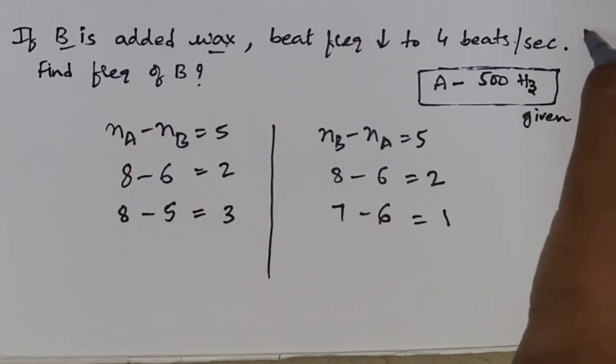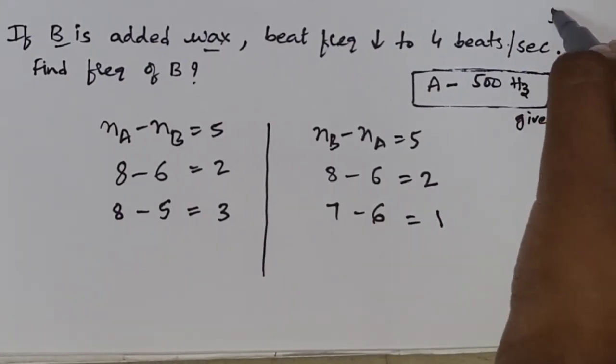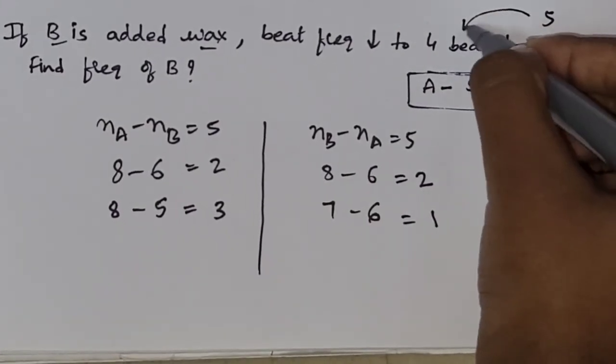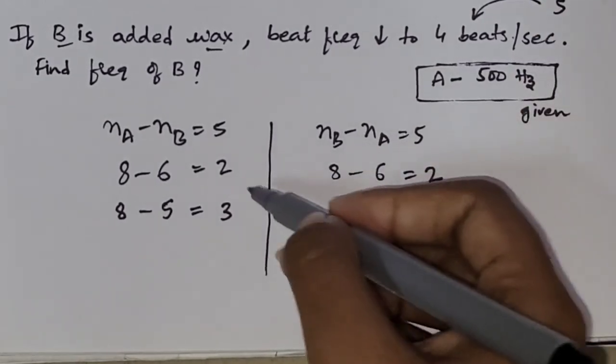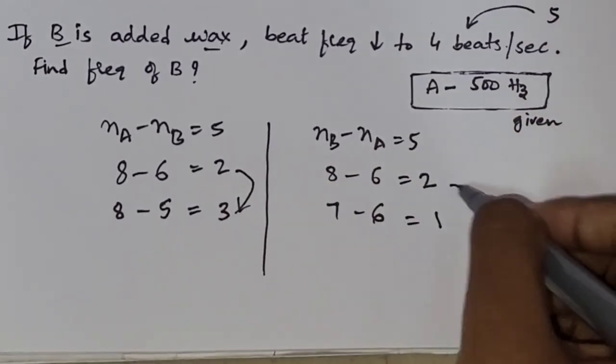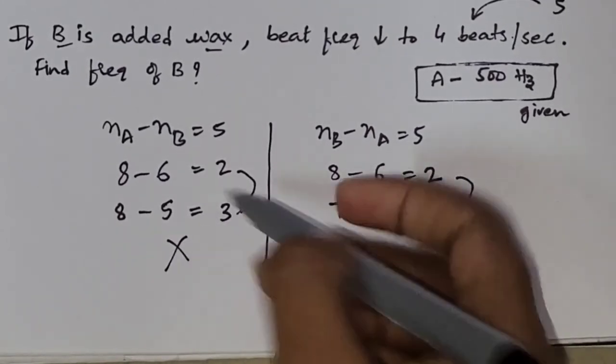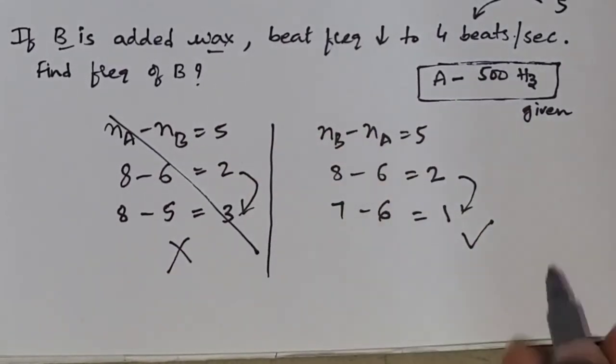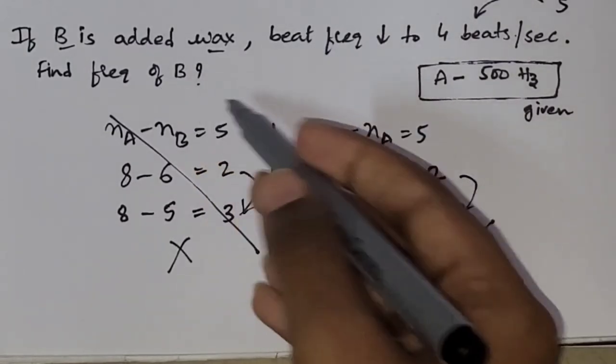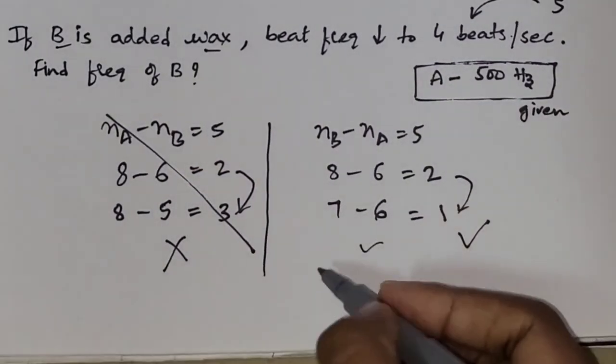Here, initially, it was 5 beats per second. It is changing to 4 beats per second. Here, it is decreasing, right? So, here also, you have to check which is decreasing one. This is the decreasing one and this is increasing one, right? So, you remove this and find out the frequency of B using this one.